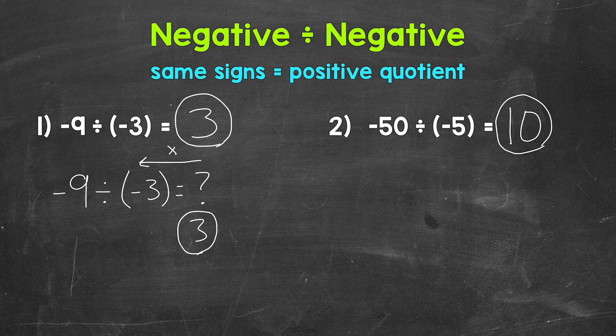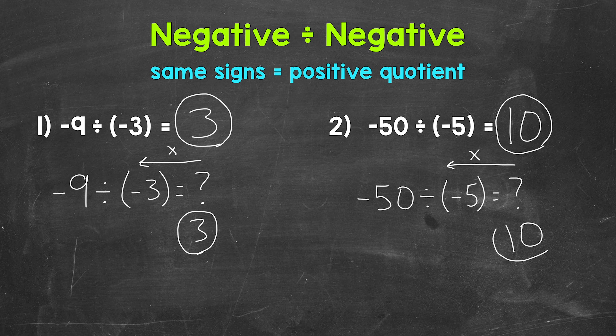Let's also take a look at this using the inverse of division, the opposite of division, multiplication. We will go the opposite way here. So negative 50 divided by negative 5 equals what? So what times that negative 5 equals negative 50? That's going to be positive 10. 10 times negative 5 equals negative 50.